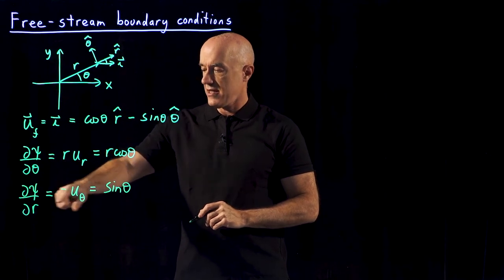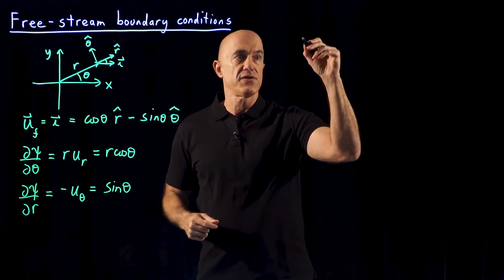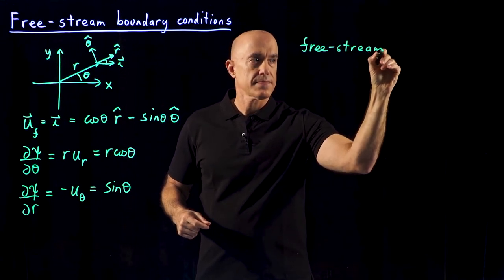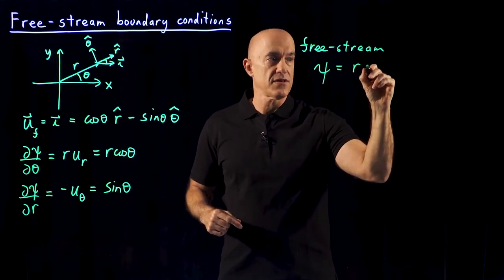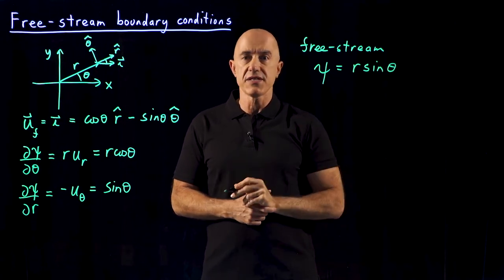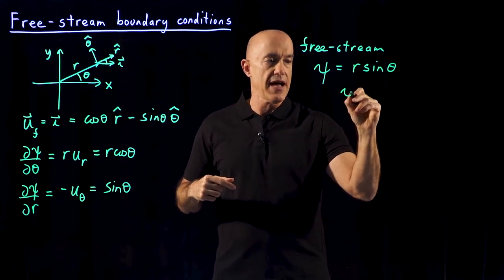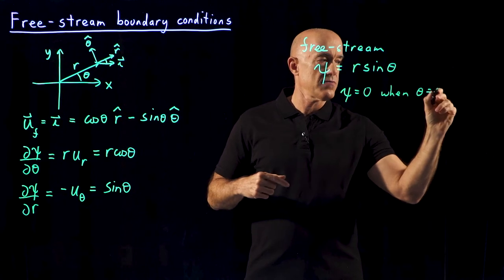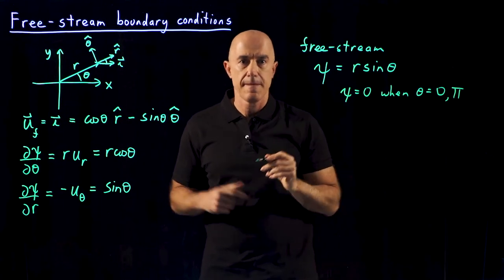A simple solution of these equations is that in the free stream, the stream function is r sine theta. That satisfies both differential equations. It also satisfies the boundary conditions on the midline, so that we have psi equals zero when theta is equal to zero — sine zero is zero — and at pi, sine pi is also zero.